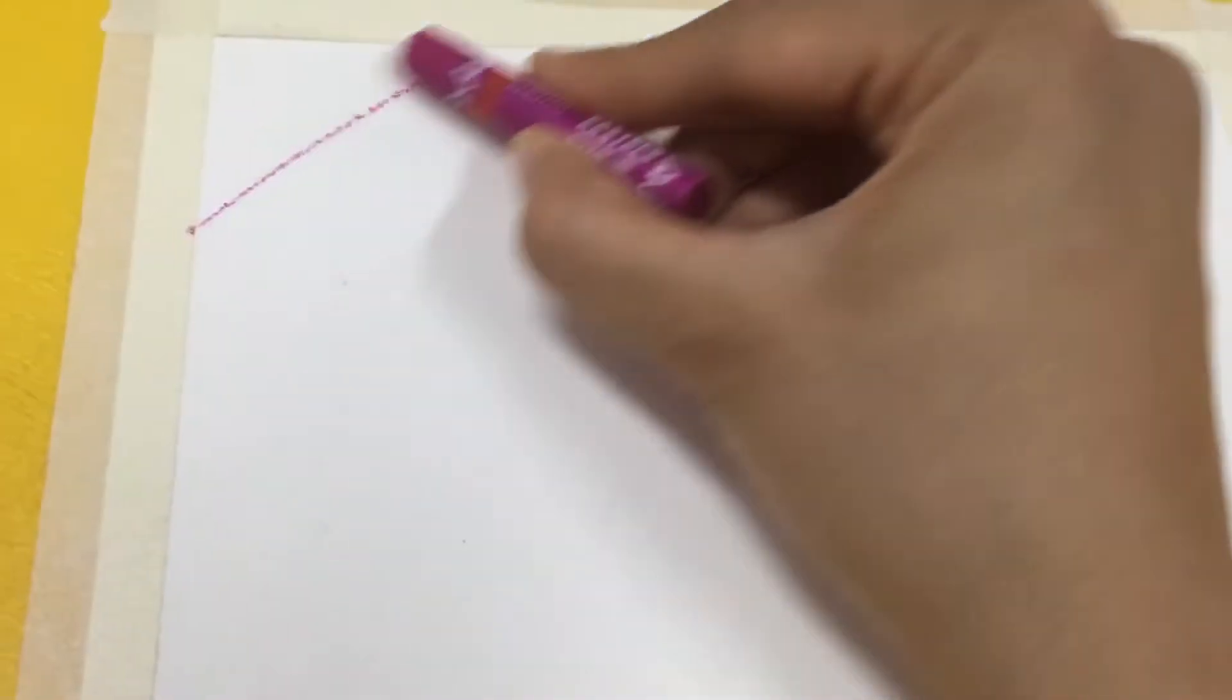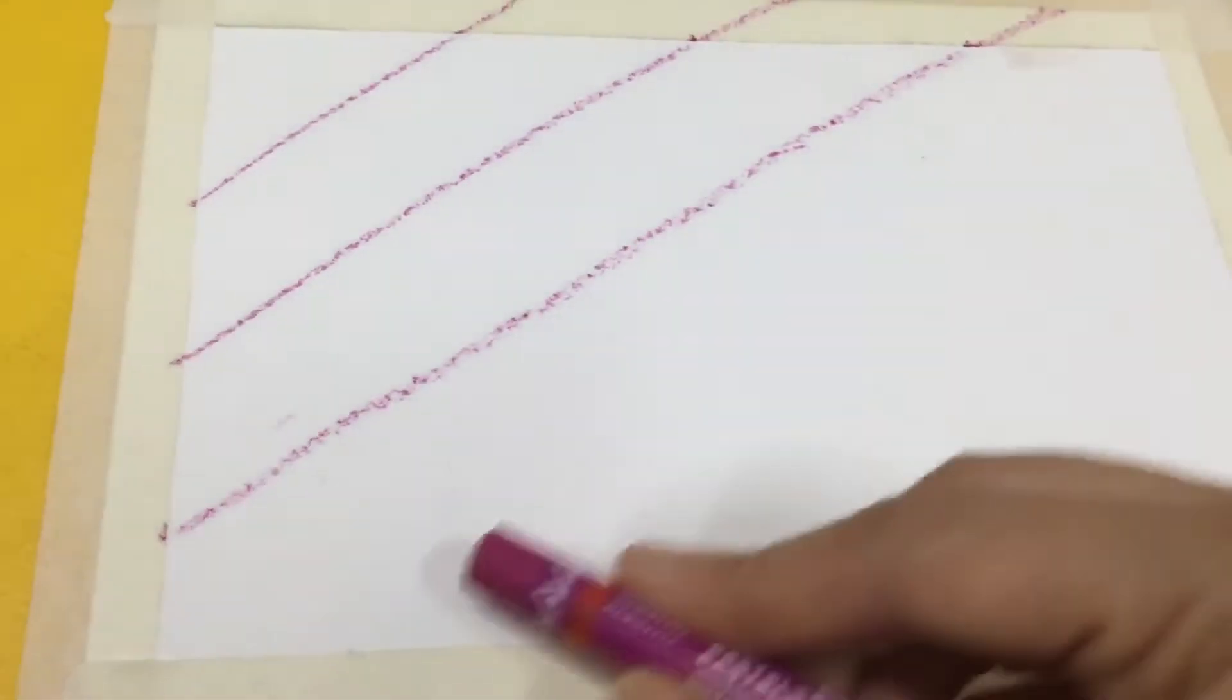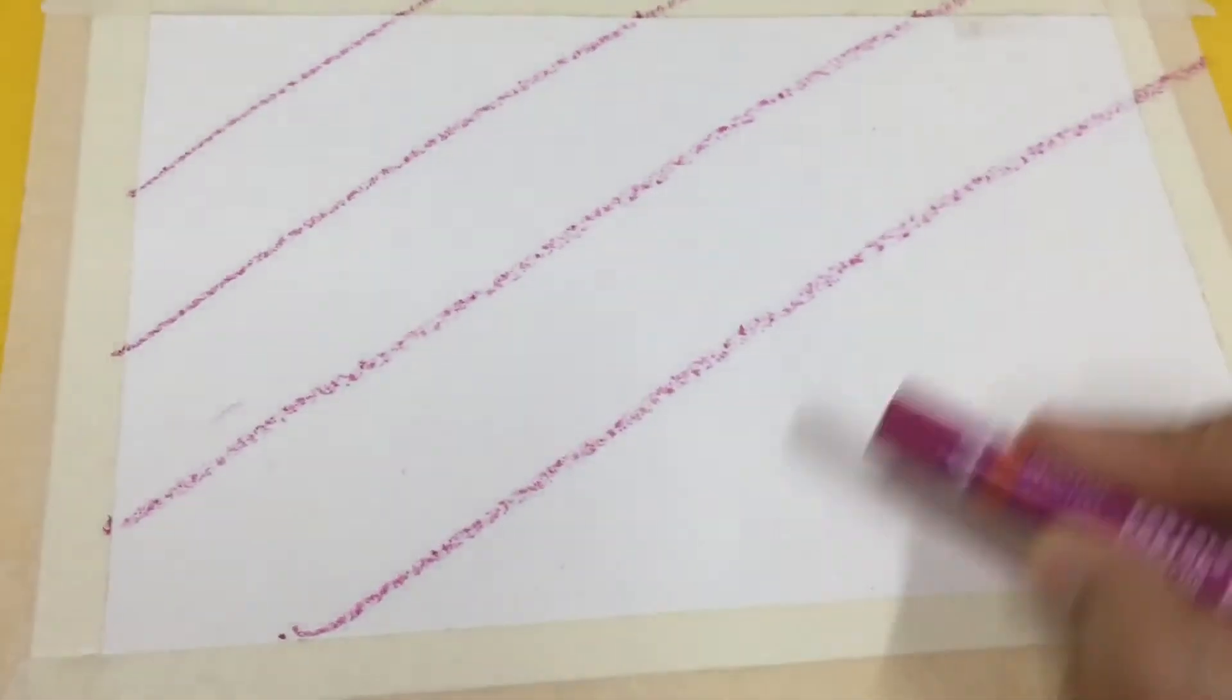Like this, I have put masking tape on all four sides making clear margins. Drawing some oblique lines here. This is just for the kids to have a margin.